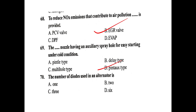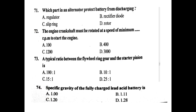The number of diodes used in an alternator is 6. The part in an alternator that protects the battery from discharging is the rectifier diode. The engine crankshaft must be rotated at a minimum of 100 rpm to start the engine. A typical ratio between the flywheel ring gear and the starter pinion is 15:1.